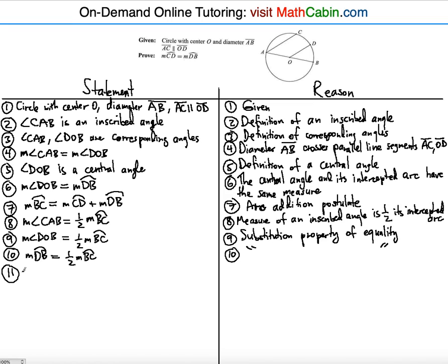The next substitution: measure of arc DB equals one half the sum — one half of the measure of arc CD plus the measure of arc DB — substituting the expression for arc BC from step seven. This is yet another substitution property of equality.